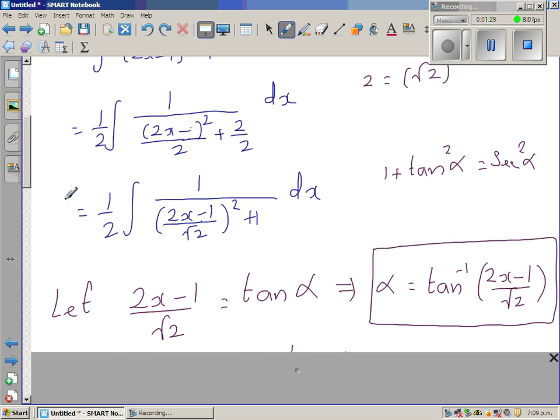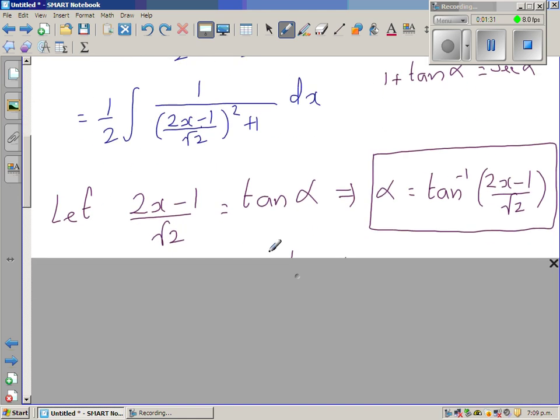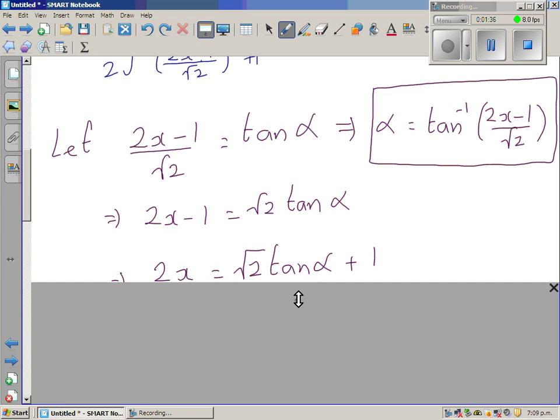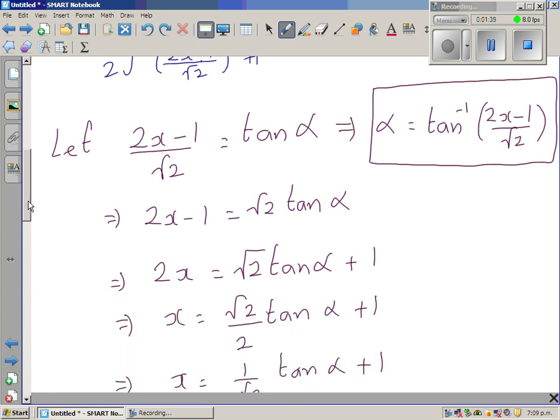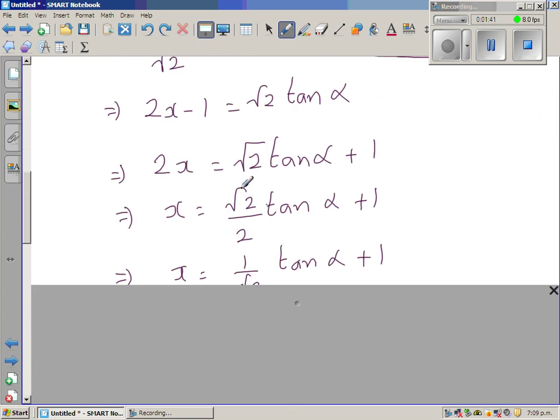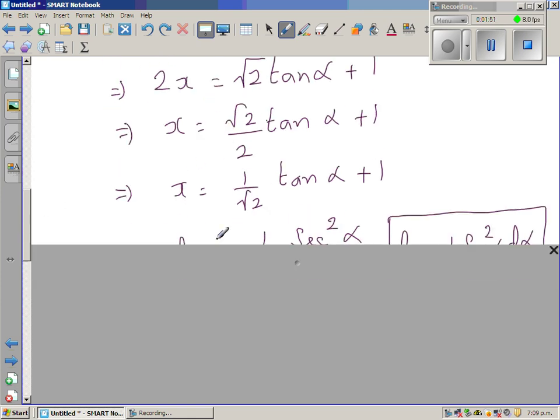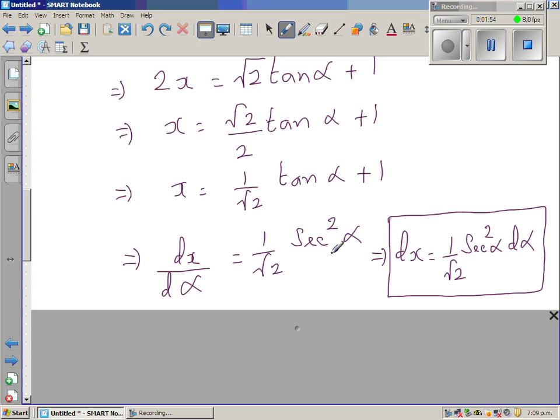We'll need this later. So now making x the subject I hope you can see the next step and differentiating both sides with respect to x. Dividing both sides by 2, this is 1 over root 2. X is 1 over root 2 tan alpha plus 1. Now differentiating both sides with respect to alpha, differentiation of tan alpha is sec squared alpha. So dx is 1 over root 2 sec squared alpha d alpha.